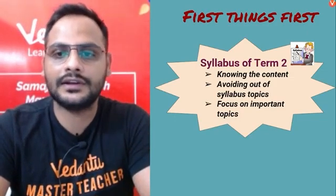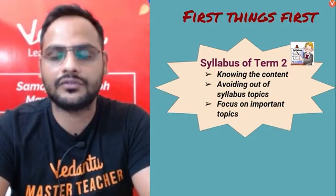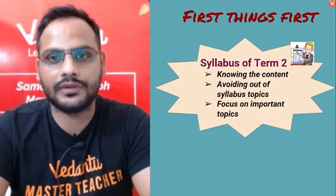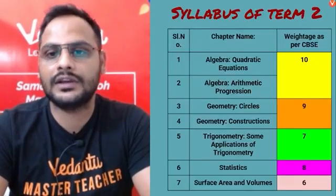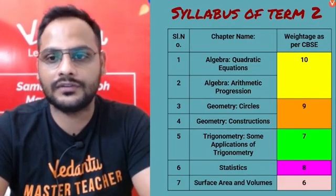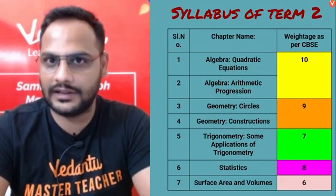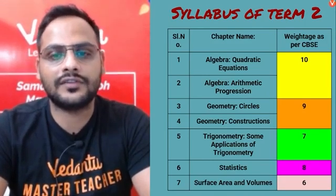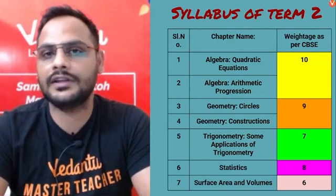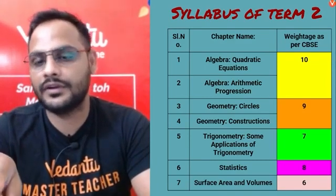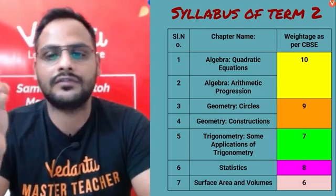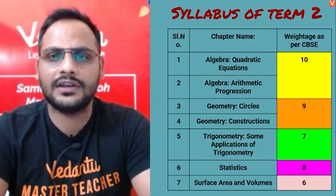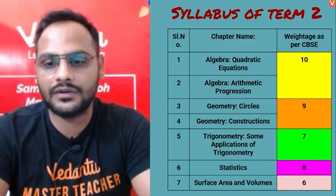Avoid topics which are out of your syllabus and focus on the important topics discussed throughout our sessions. In algebra you have quadratic equations and arithmetic progression, which will be of 10 marks. In geometry you have circles and construction, which is 9 marks — and this time the geometry portion is very easy compared to Term 1. Trigonometry is also easy, and statistics is a direct chapter with formulas.